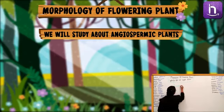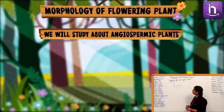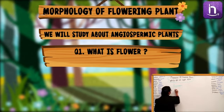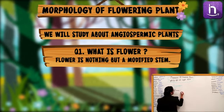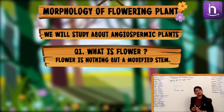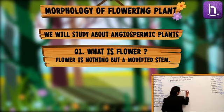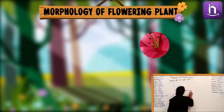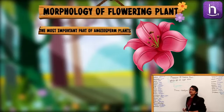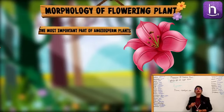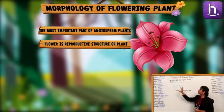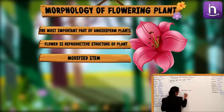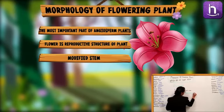What about Angiospermis plants? First of all, what is exactly a flower? A flower is nothing but the Modified Stem. We call it a flower. And why is this important for a plant? This is the most important part in Angiosperms because it is called the Reproductive Structure — Prajiniya Sanrachna. This Modified Stem is the Reproductive Structure of the plant.